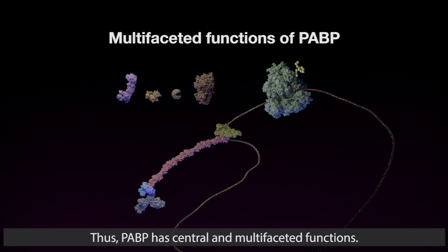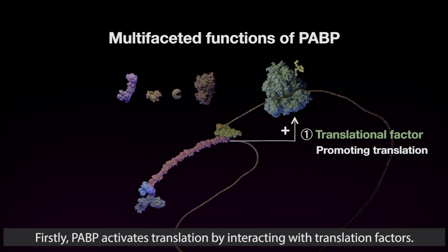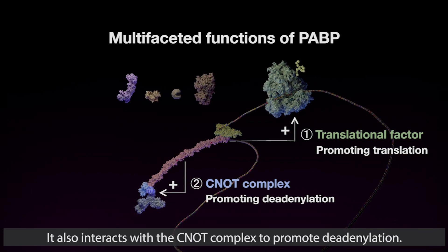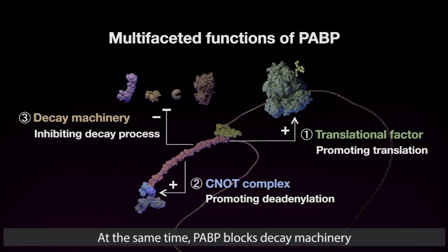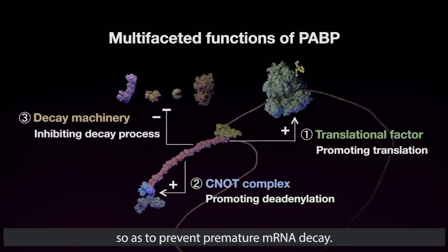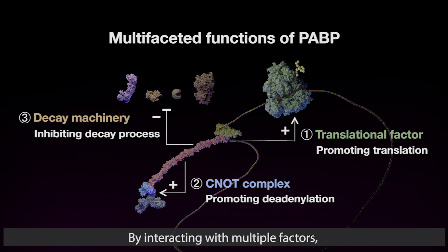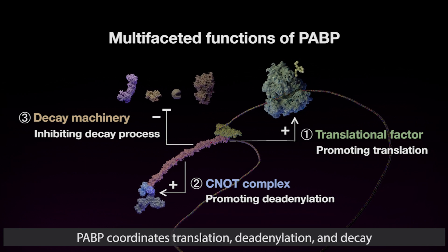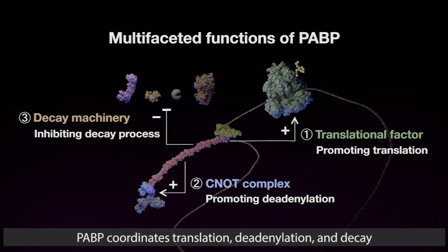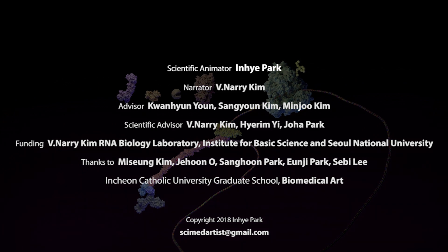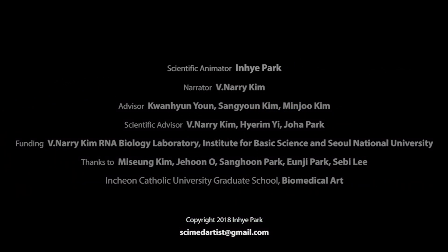Thus, PABP has central and multifaceted functions. Firstly, PABP activates translation by interacting with translation factors. It also interacts with the CNOT complex to promote deadenylation. At the same time, PABP blocks decay machinery so as to prevent premature mRNA decay. By interacting with multiple factors, PABP coordinates translation, deadenylation, and decay in a timely ordered manner.